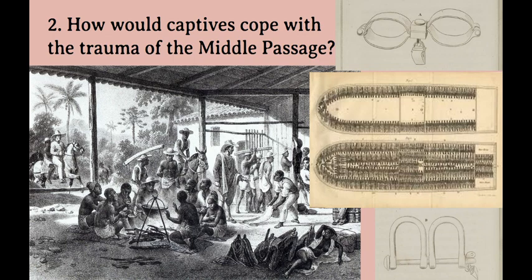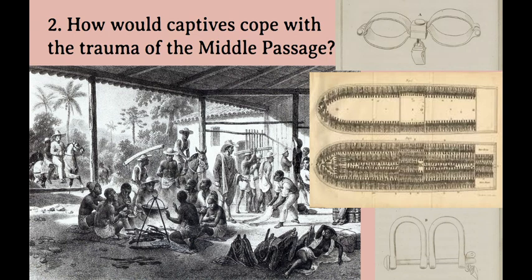Second question: how would captives cope with the trauma of the Middle Passage? The Middle Passage was an incredibly traumatic experience for every single person involved. It is the middle portion of a captive person's journey from their home somewhere in West Africa to their new reality as an enslaved person in America. It was also called the Middle Passage because it was sometimes the middle point of a triangular journey from Europe to Africa, from Africa to America, and from America to Europe. Either way, this journey inside the bottom of a boat was a traumatic experience for all people involved.